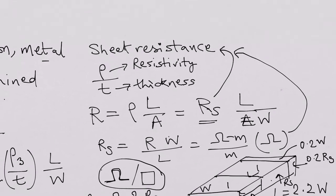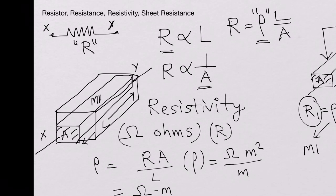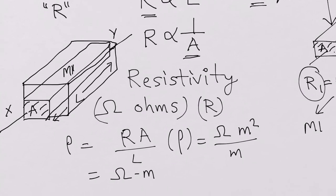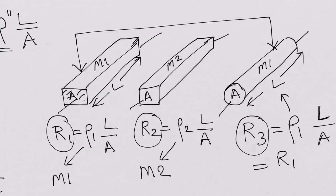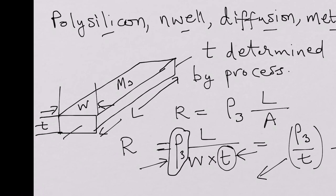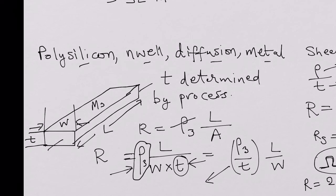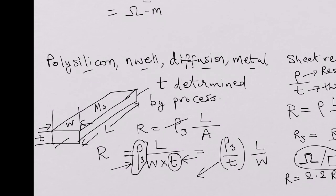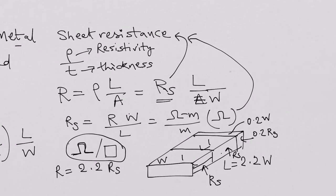In this video, we learned about resistors, resistivity, and how resistance varies with length and cross-sectional area. We looked at three different resistors made of two different materials and calculated their resistance. We then discussed semiconductor processing, where we have different types of resistors but no control over thickness, leading us to introduce the concept of sheet resistance, which is normally used instead of resistivity in semiconductors.